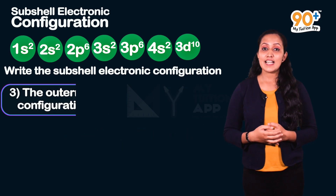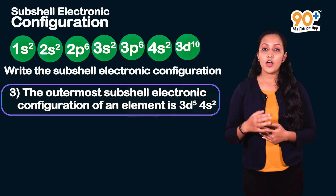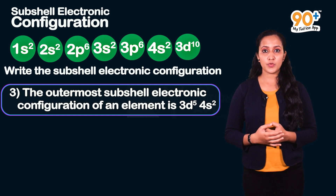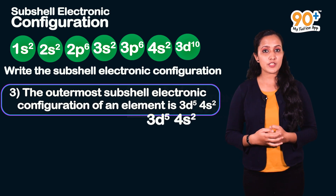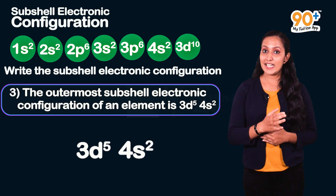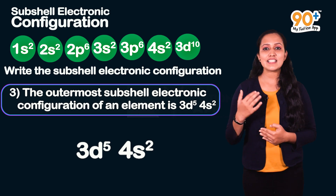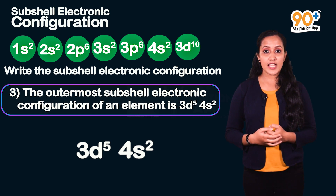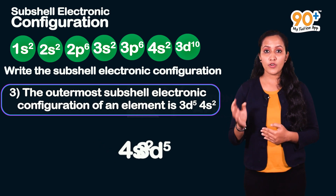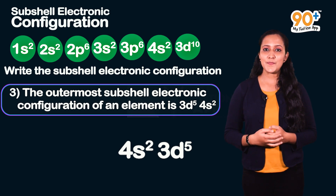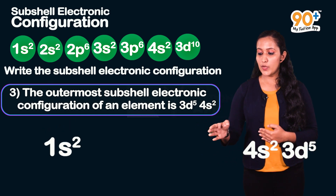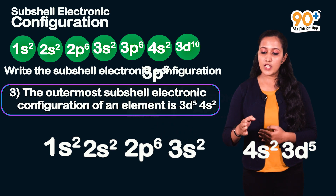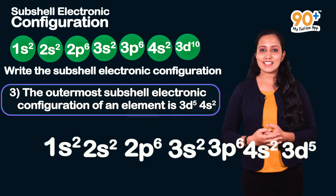Third question: The outermost subshell electronic configuration of an element is 3d⁵, 4s². We arrange 3d and 4s in energy order. Since the energy of 4s is less than 3d, we rearrange to get 4s², 3d⁵. The complete subshell electronic configuration is: 1s², 2s², 2p⁶, 3s², 3p⁶, 4s², 3d⁵.